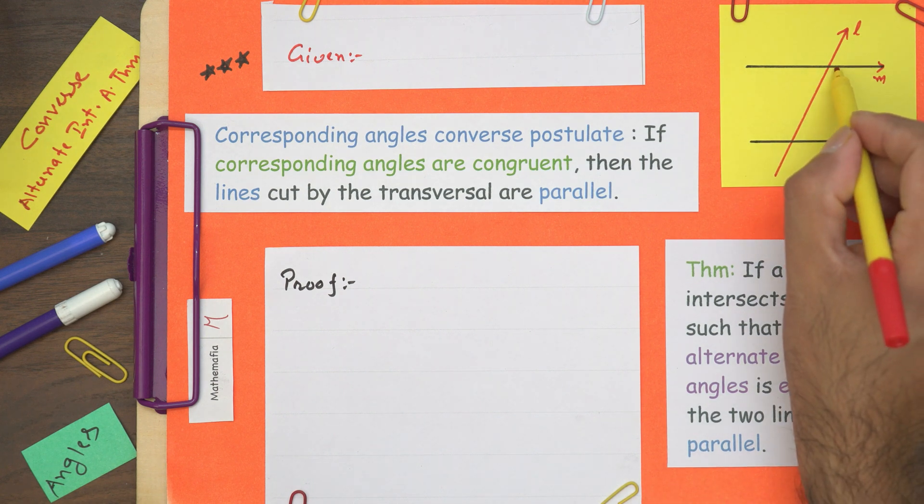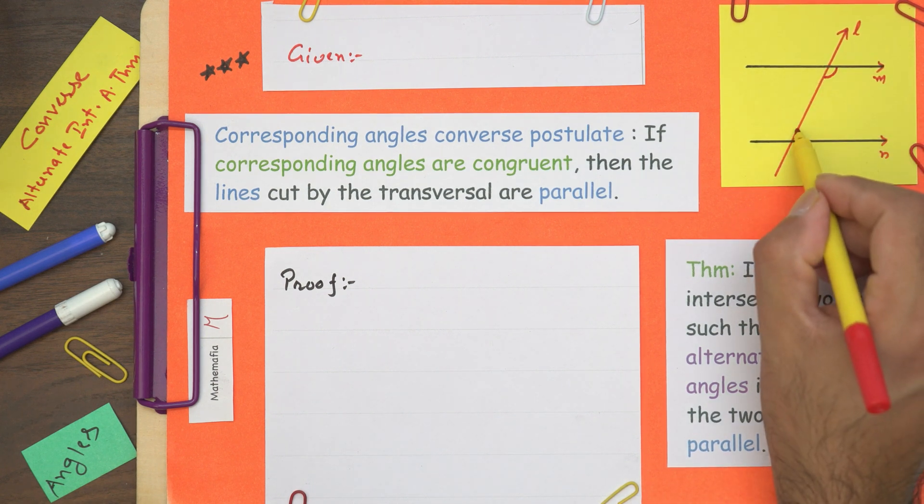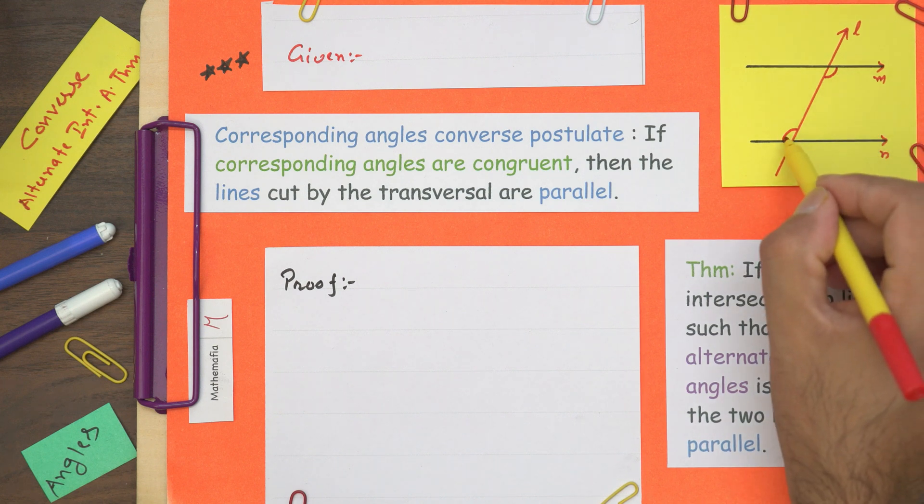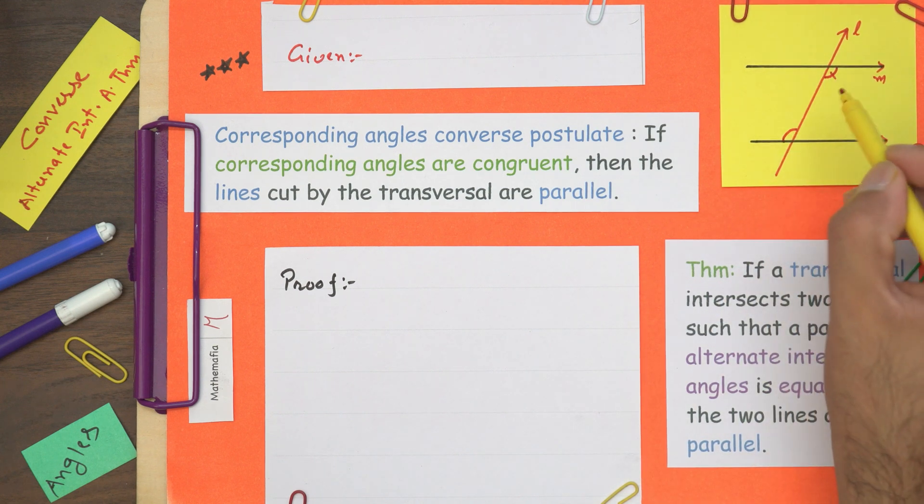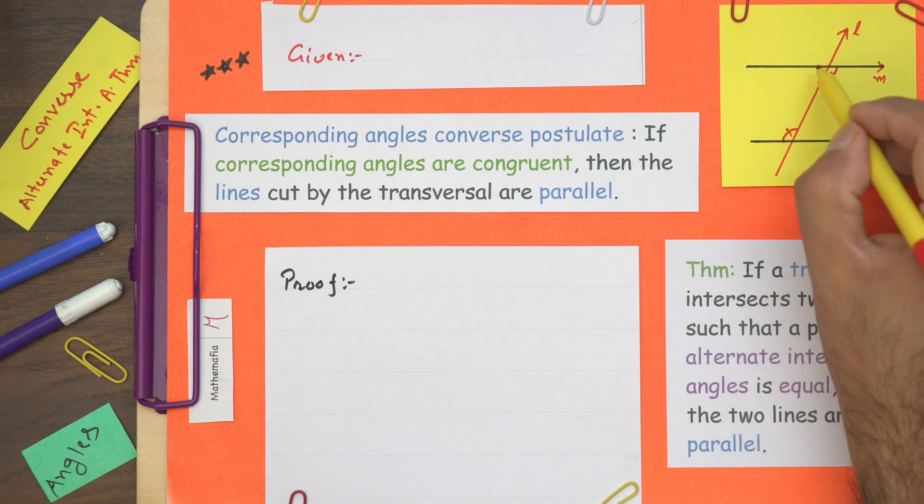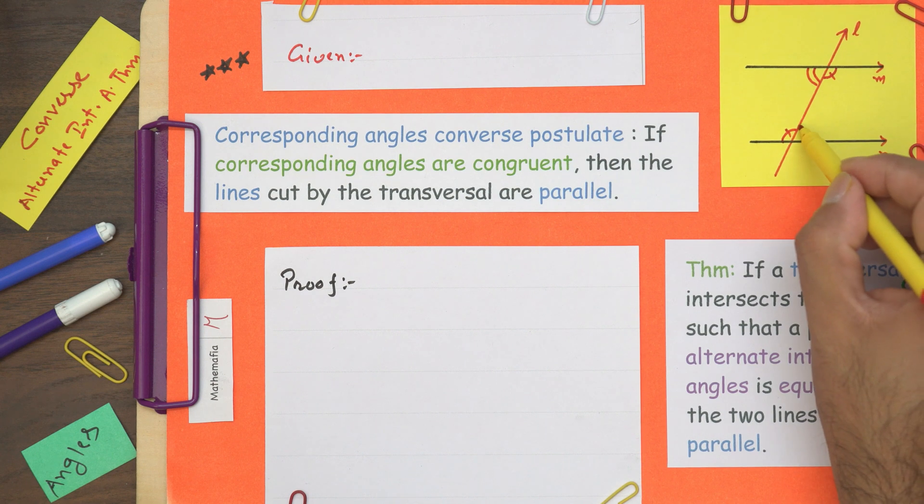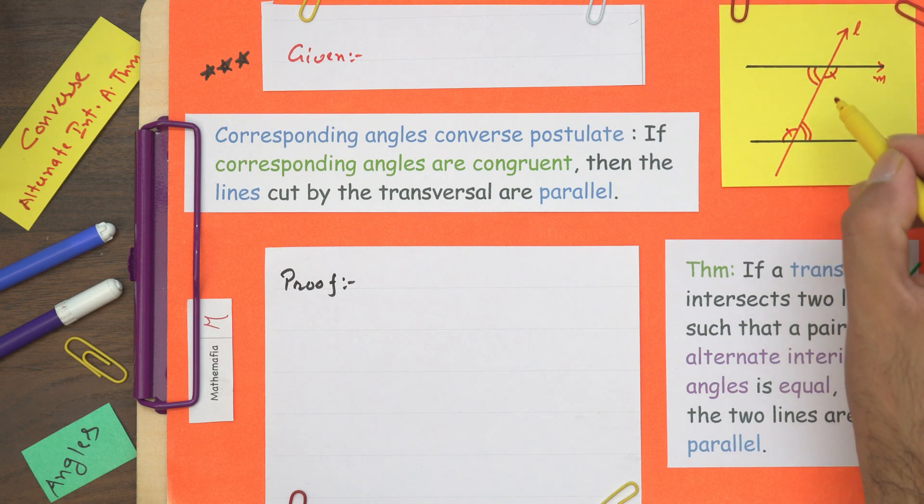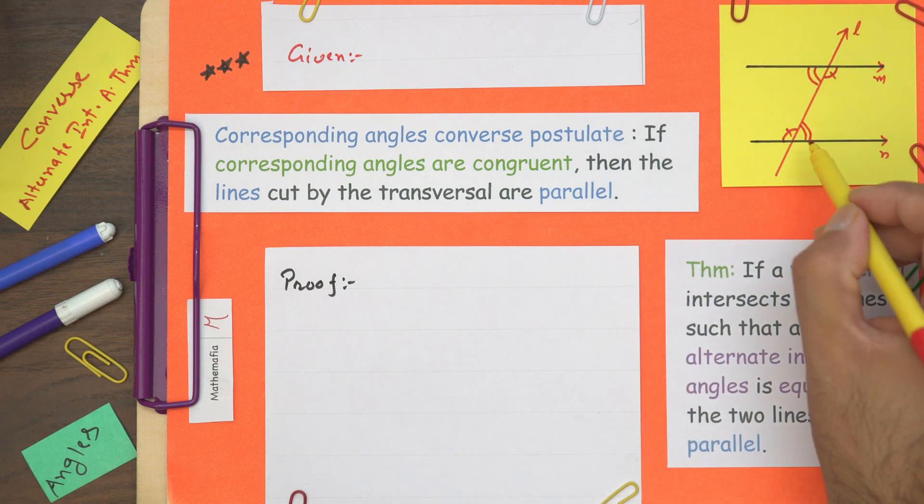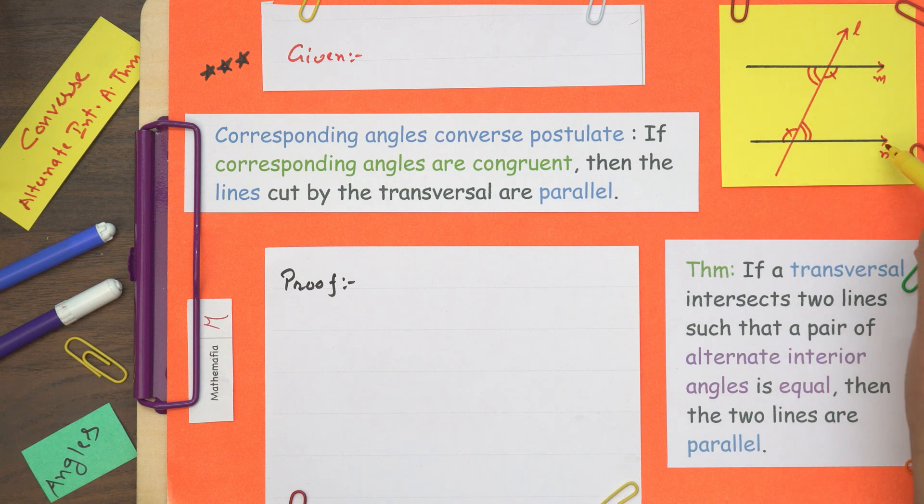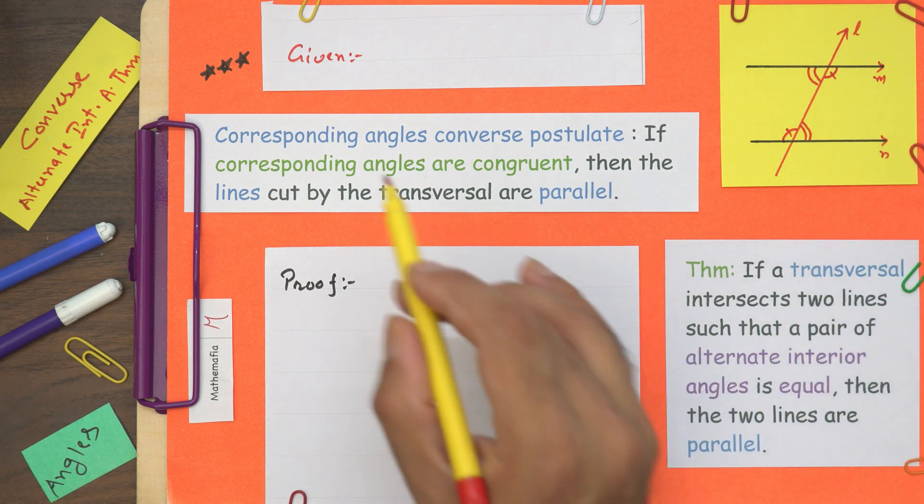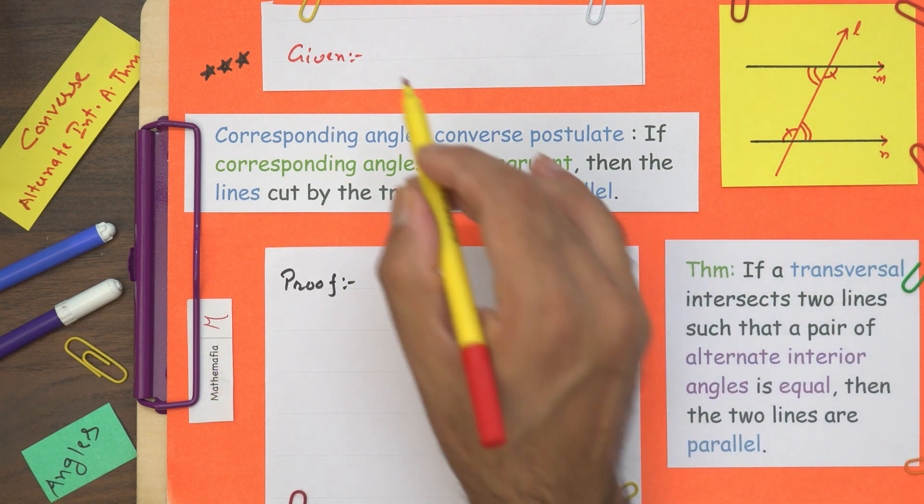These angles are alternate interior angles. If this pair is equal, or this other pair is equal, then we have to prove that M and N, these two lines, are parallel. This is what we have to prove.